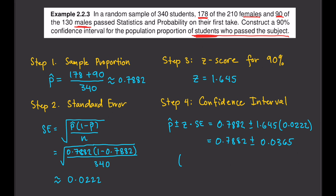Writing in interval notation: lower bound = 0.7882 − 0.0365 = 0.7517, upper bound = 0.7882 + 0.0365 = 0.8247. That is the 90% confidence interval for the proportion of students who passed statistics and probability, about 75.17% to 82.47%.